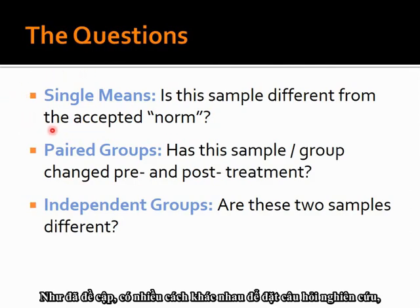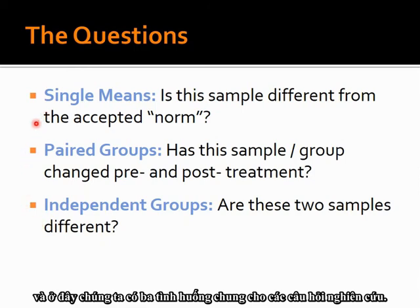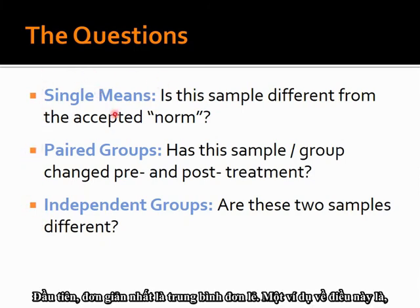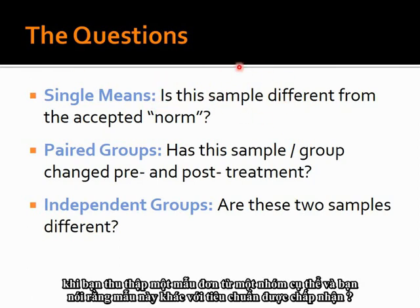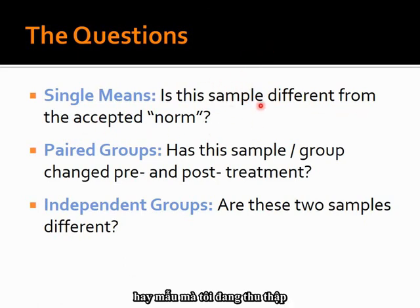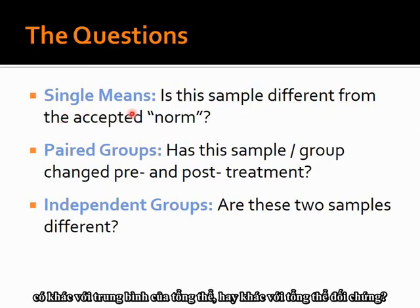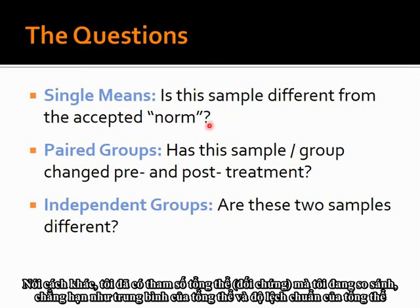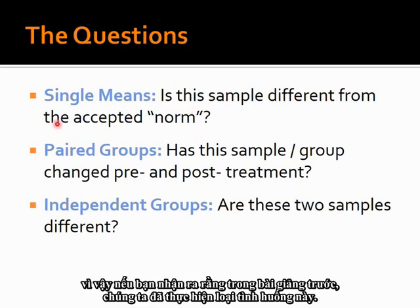There are many different ways a research question can be asked. Here we have three common scenarios. The simplest is single means — you collect a single sample from a particular group and ask: is this sample different from the accepted norm, different from the population mean, or different from a control population? In other words, you already have the population parameters you're comparing to, like the population mean and population standard deviation. We've already been doing this kind of scenario in the previous lecture.